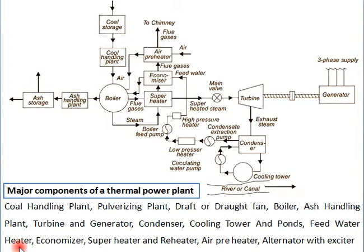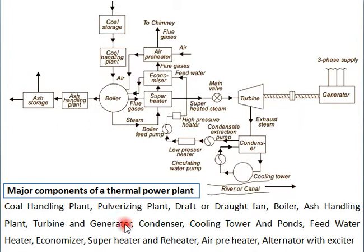There are two feed water heaters: one is the LP heater (low pressure heater) and the second is the HP heater (high pressure heater). The function of the LP and HP heaters is to increase the temperature of feed water with the help of steam extracted from different levels of the turbine. This feed water then comes to the economizer, which further increases the temperature of feed water using the flue gases coming out from the boiler.